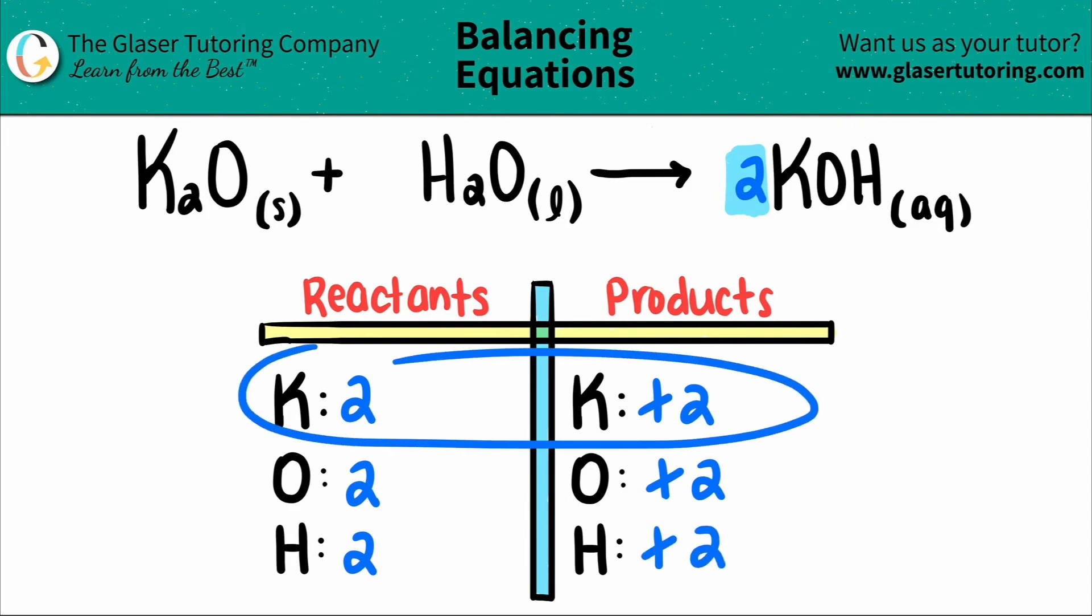And look at that, just by balancing one element we actually balance them all. So now the equation is balanced. The balanced equation would be one K2O plus one H2O which will yield us two KOHs.